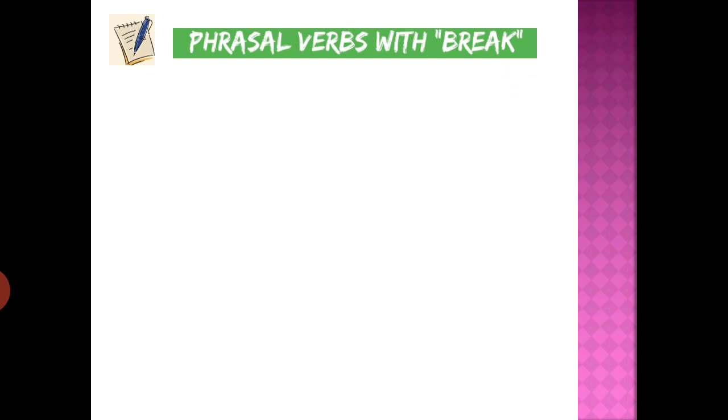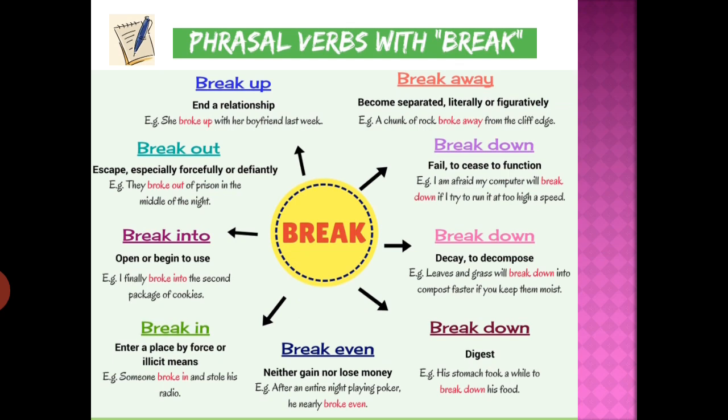Most main verbs have different combinations of prepositions and adverbs that give different meanings. For example, with the verb 'break': 'break away' means to become separated literally or figuratively; 'break up' means to end a relationship; 'break out' means to escape, especially forcefully or defiantly; 'break into' means to open or begin to use; 'break in' means to enter a place by force or illicitly; 'break even' means to neither gain nor lose money.